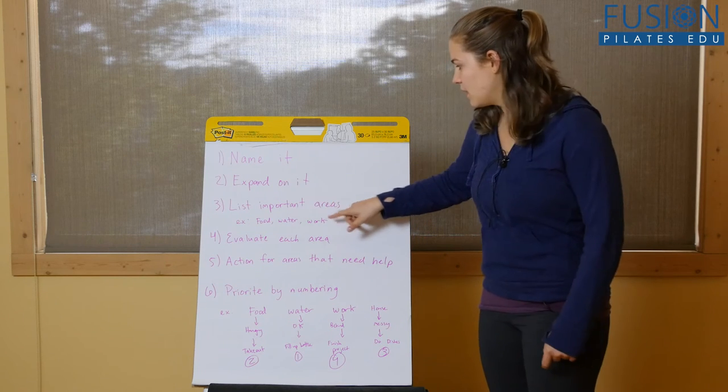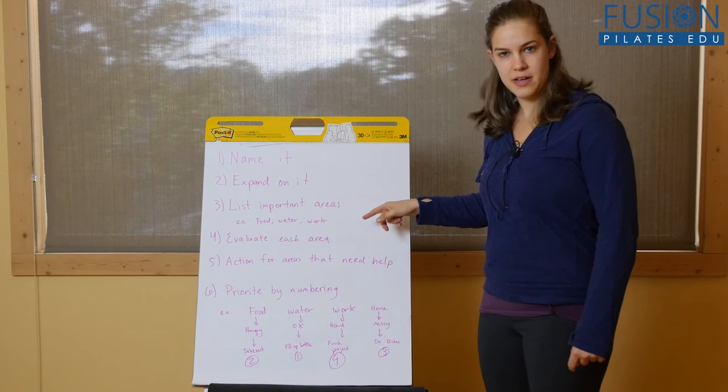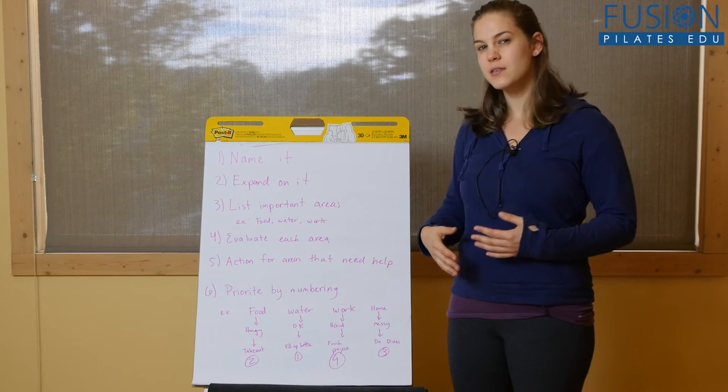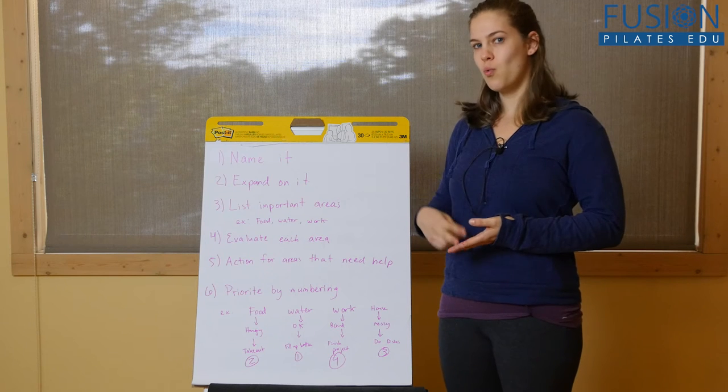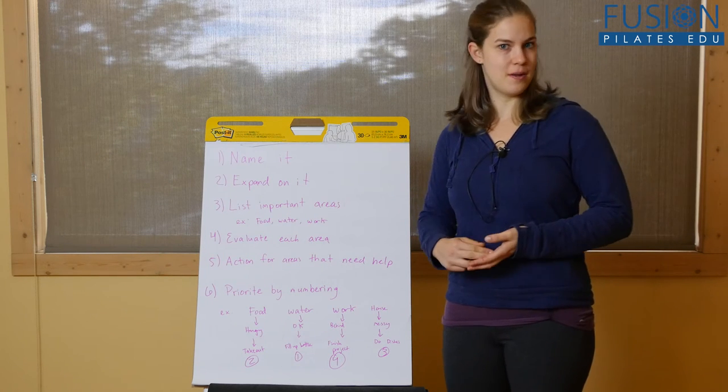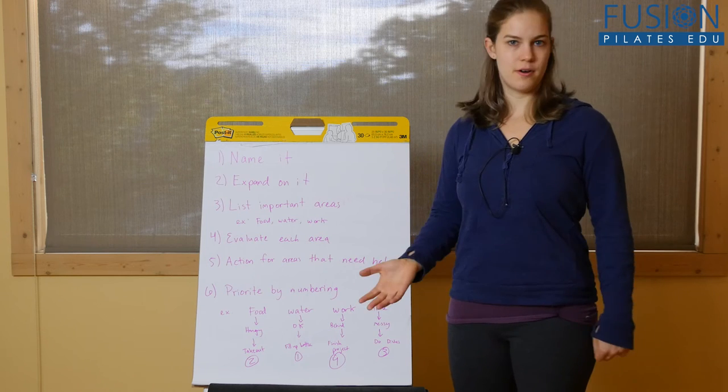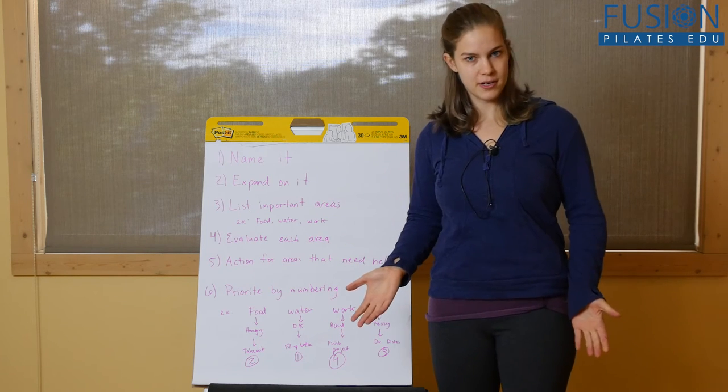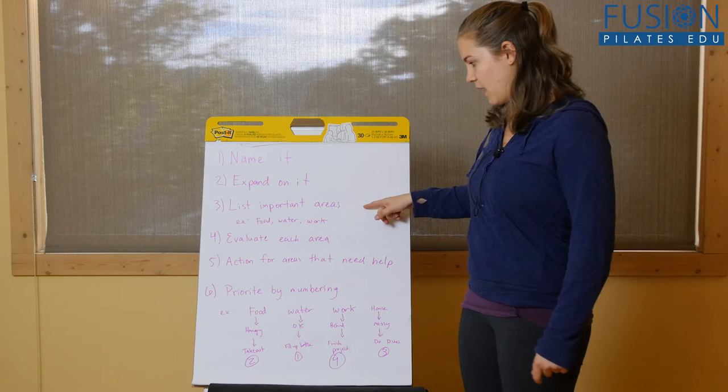Step three, list important life areas. Most people have somewhere between six and ten of these. It might be like food, water, sleep, work, friends, family, any activities that are really important to you like your Pilates practice. Those would go in this category.